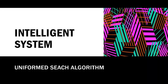Our topic for today is uninformed search algorithms. Bidirectional search algorithm is applied and this algorithm divides one graph into two sub-graphs. It starts traversing from node one in the forward direction and starts from goal node 16 in the backward direction.